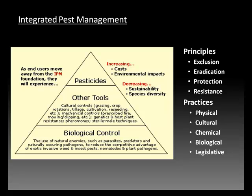In the middle of the pyramid are cultural controls, mechanical controls, genetics, host plant resistance, and sterility. At the top are chemical pesticides. Pesticides are initially effective against many organisms; however, they lose effectiveness over time as organisms develop resistance. They also build up in the environment, can cause pollution, harm non-target organisms, and pose a risk to human health.